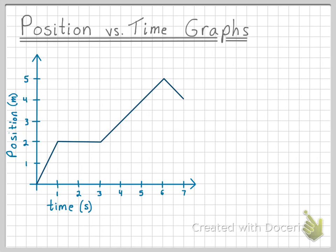This graph can actually tell us quite a few things. We know the position of an object at any given time, and since we know position and times, we can calculate the average velocity. So let's do an example.